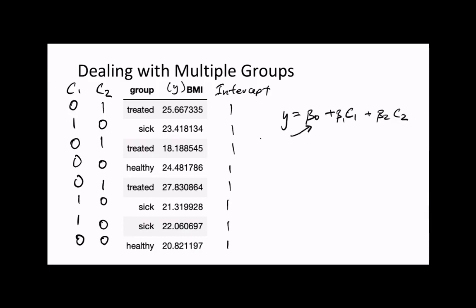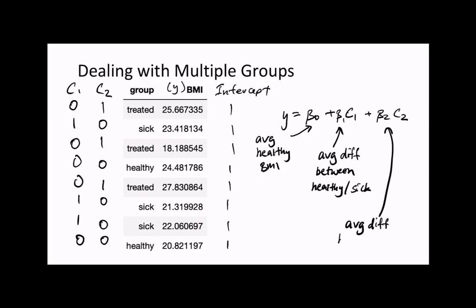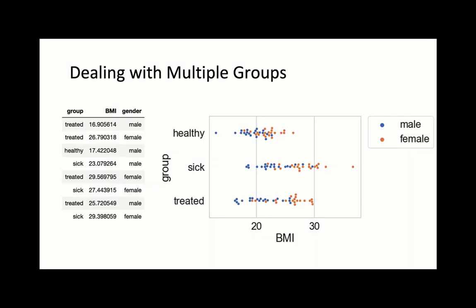Beta0 will give the average body mass index of the healthy group. Beta1 will give the average difference between the healthy group and the disease group without treatment. And beta2 will give the average difference between the healthy group and the disease group with treatment. Since we're already dealing with multiple categories, there is nothing stopping us from extending this to multiple covariates—for instance, looking at body mass differences while also accounting for differences in gender.